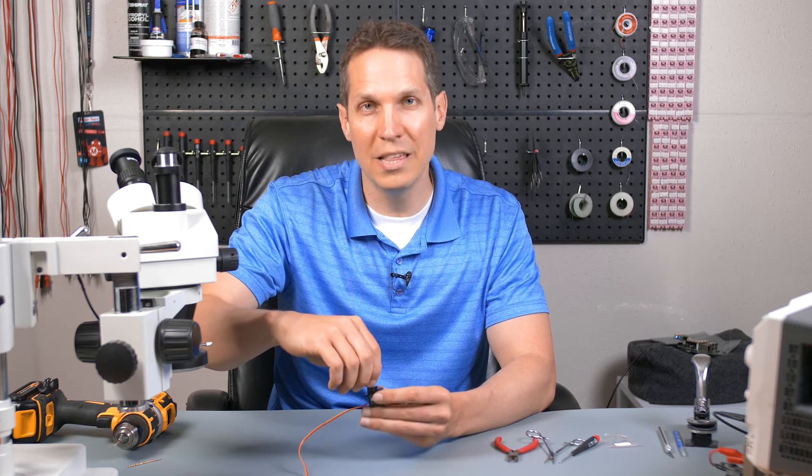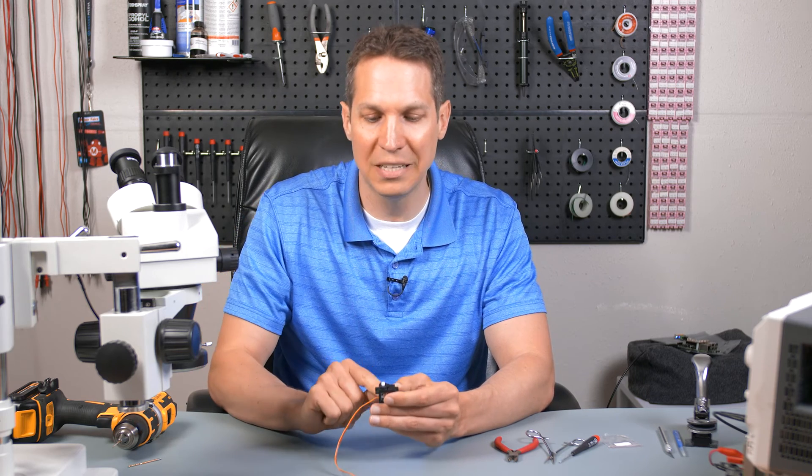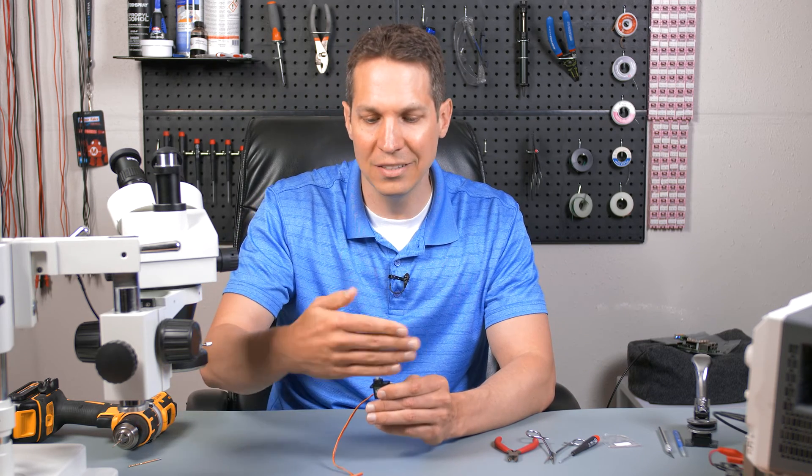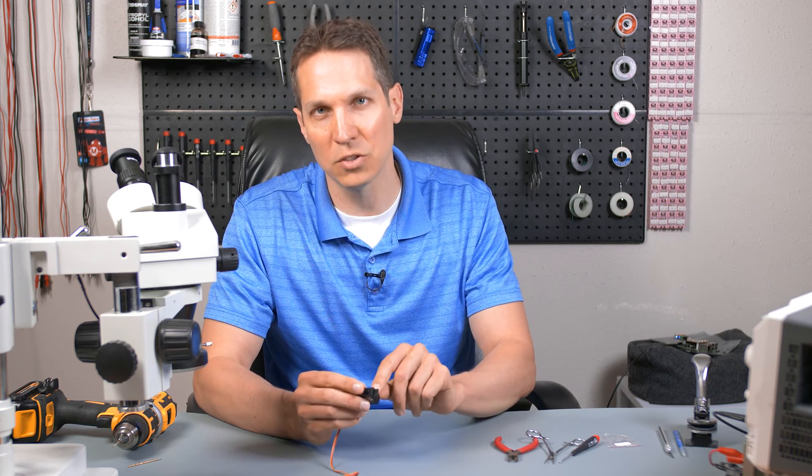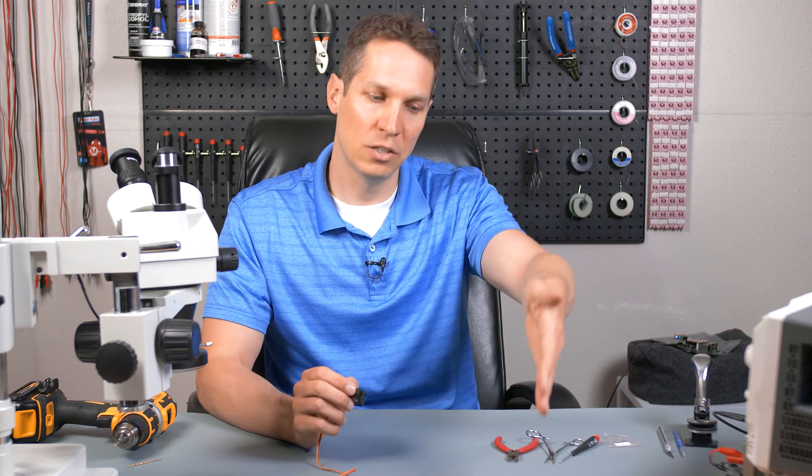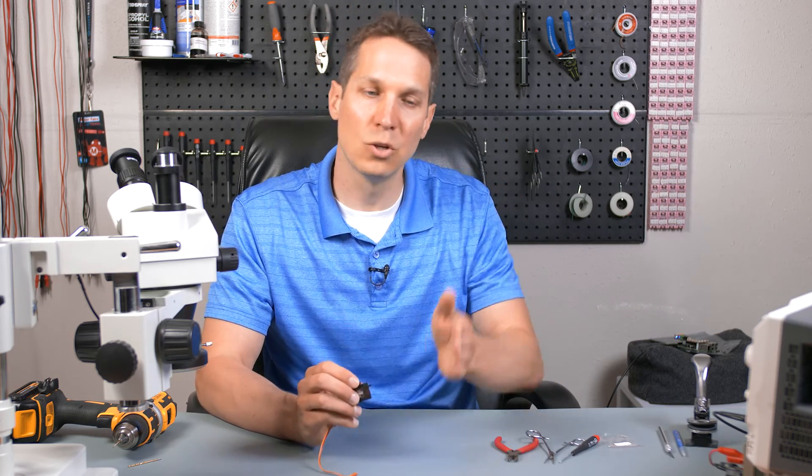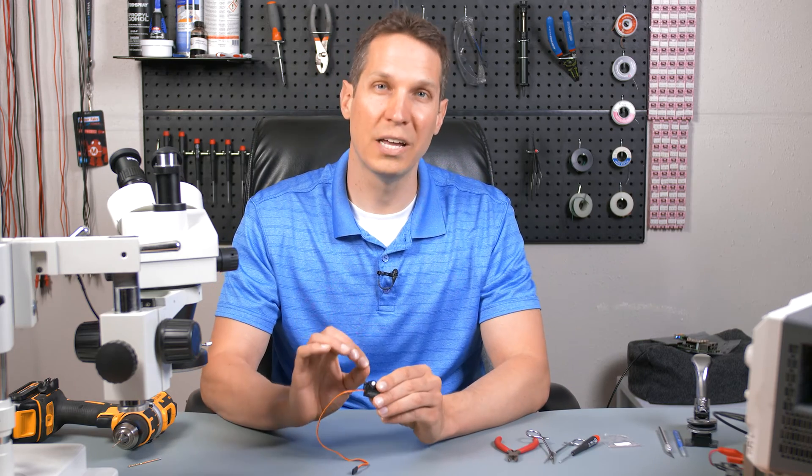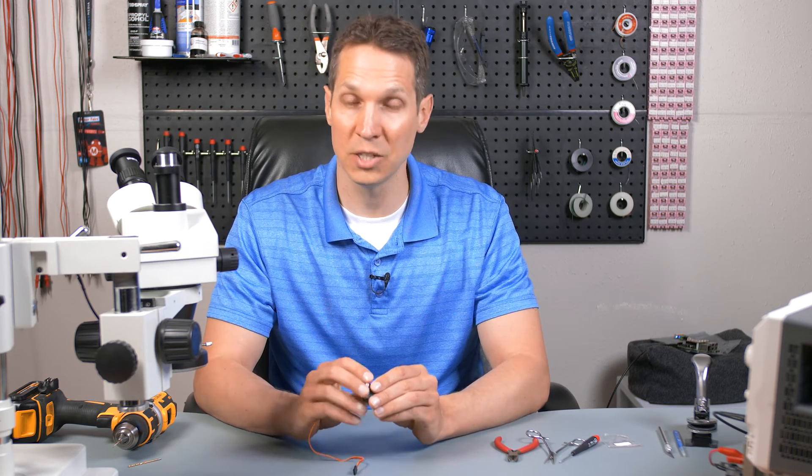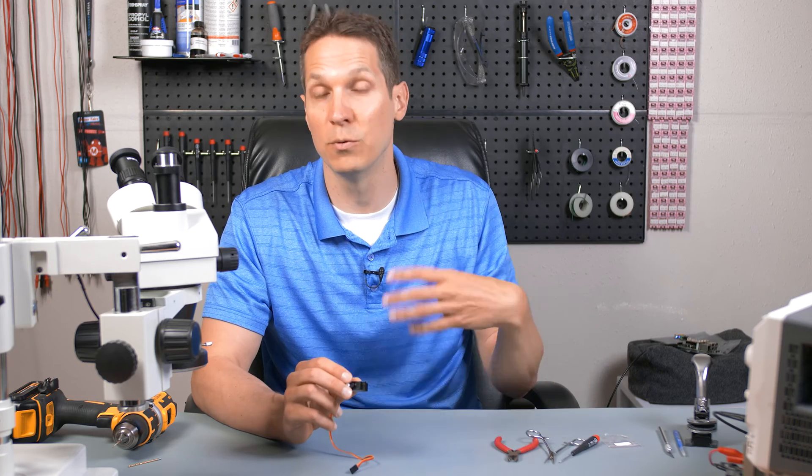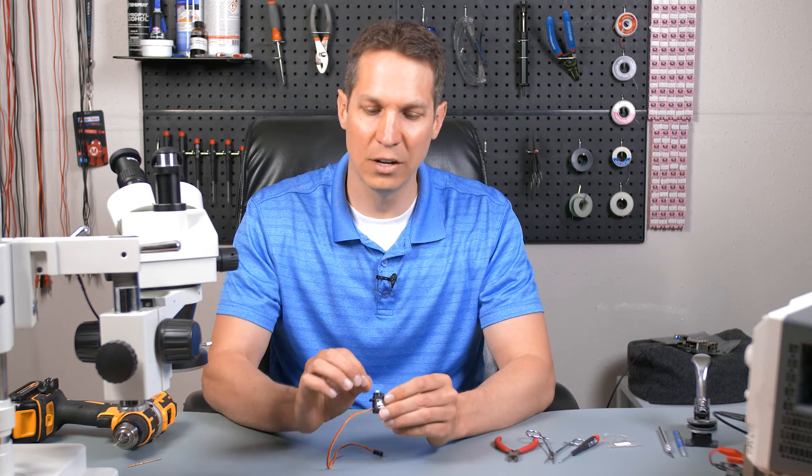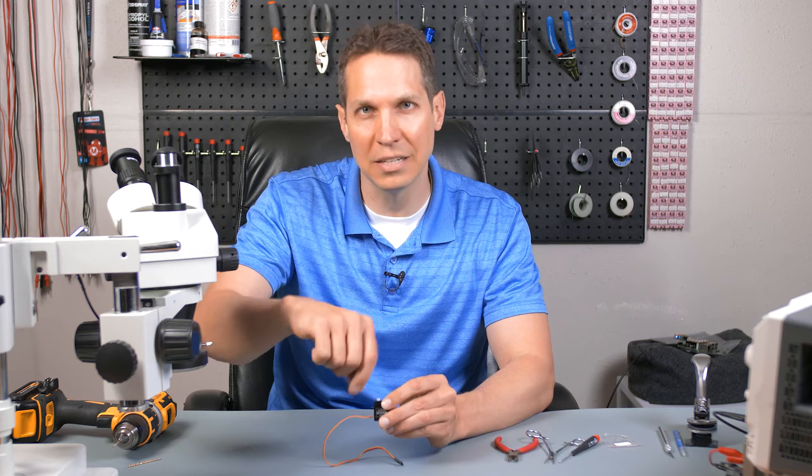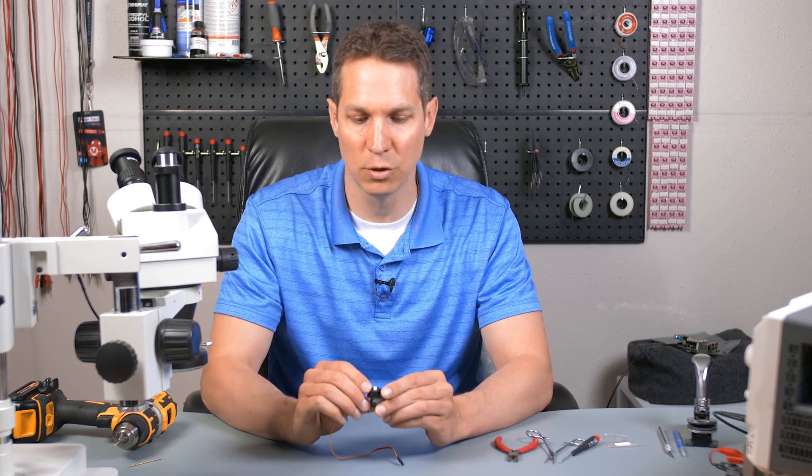And then also, the way these work is the way they know where they are is there's a potentiometer in here. And so as this moves, it changes the value of that potentiometer and there's a small circuit board in here that says, oh, the potentiometer is giving me this reading now, so I know that I'm in this position and it gives it that feedback. So we are going to have to bypass that potentiometer in one of two ways, and then also make sure that that potentiometer isn't causing any issues as we completely rotate.